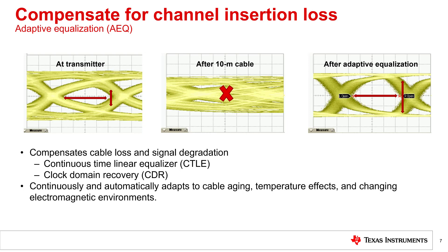First, the vCubeLink deserializers utilize a continuous-time linear equalizer, or CTLE circuit, which acts as an amplifier to high-frequency signal content that is attenuated more rapidly across a lossy channel. The CTLE circuit has several different gain stages to account for varying channel loss depending on the type or length of cabling used in the system. Next, the vCubeLink deserializers utilize a clock and data recovery, or CDR circuit, to further improve the signal quality in the time domain by reducing the effects of jitter caused by ISI, reflections, or external noise. For more details on how to interpret eye diagrams, see the Precision Labs video, "What is an eye diagram?"